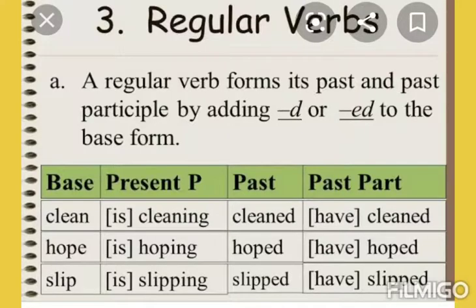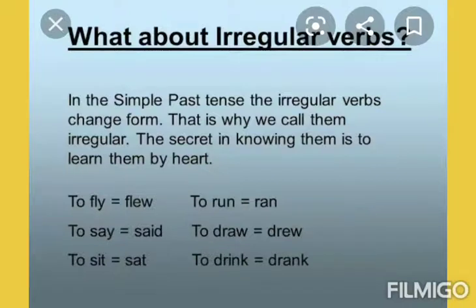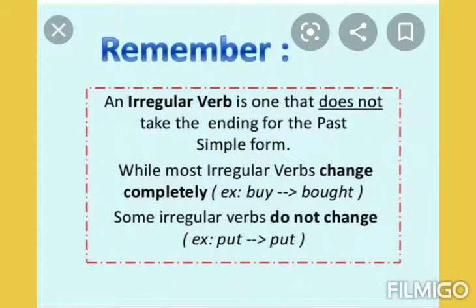Irregular verbs are those verbs which are not formed by adding D or ED to the base form — that is why we call them irregular. The secret to knowing them is to learn them by heart; you need to memorize them. For example, 'fly' becomes 'flew' — not 'flied'. 'Run' becomes 'ran' — not 'rund'. So you have to be very careful and learn them.